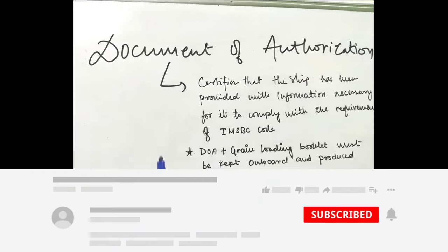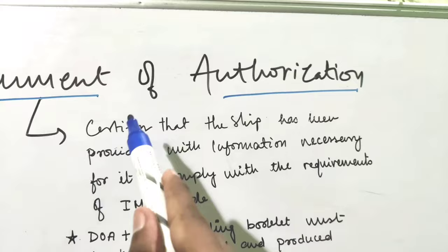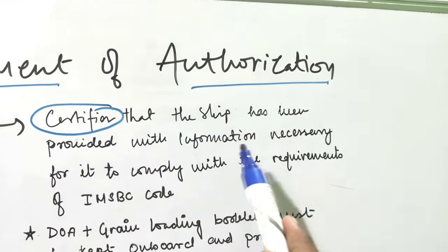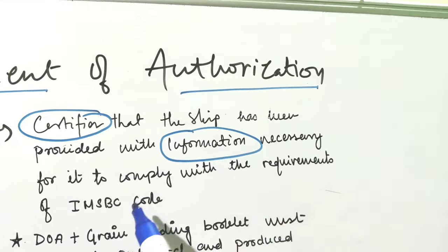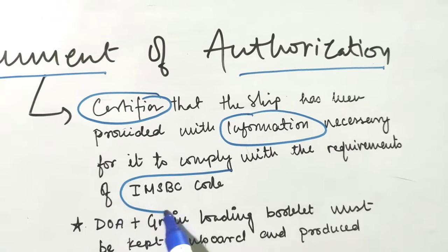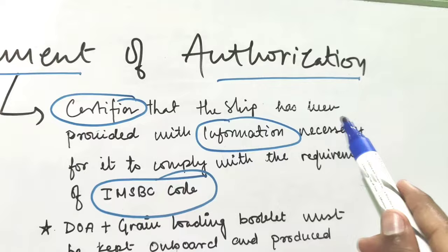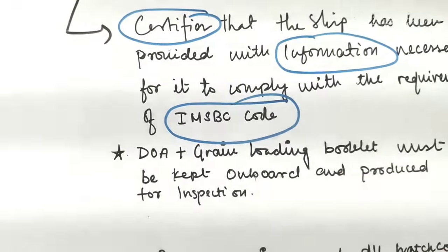Hello and welcome. In this video I am going to discuss the Document of Authorization. The Document of Authorization certifies that the ship has been provided with information necessary for it to comply with the requirements of IMSBC code. The key words are: it certifies that the information is provided which is necessary to comply with the IMSBC code.